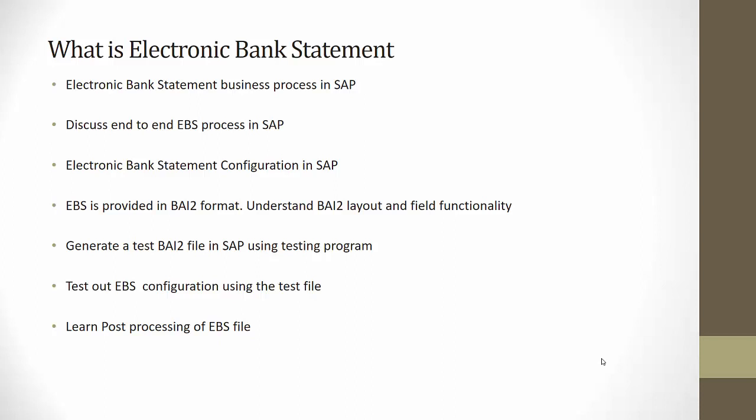Then we will look at the EBS file which is received from the bank. The EBS file received from the bank is in BAI2 format — that is Bank Administrative Institute format. This file has a specific layout where each line is identified by its code and has a unique functionality. For example, there is a file header, a group header, an account header, transaction details, and trailer records. We will open one of these files and look at each row and its codes to understand the fields and functionality in this BAI2 file.